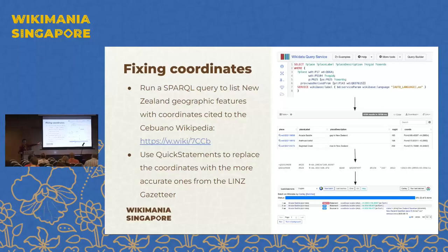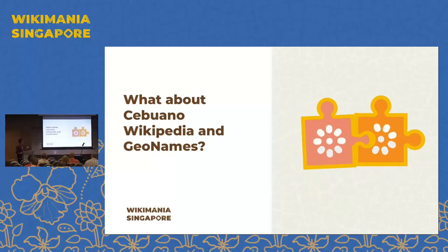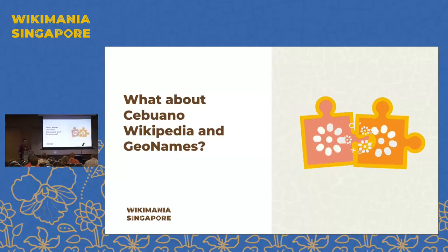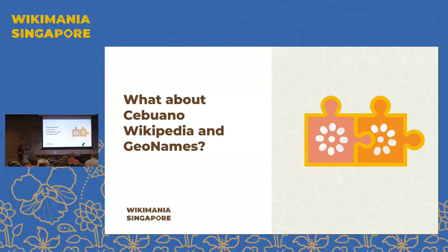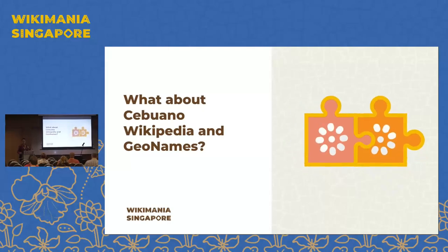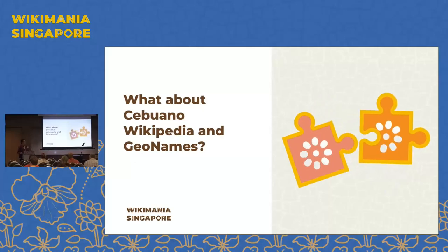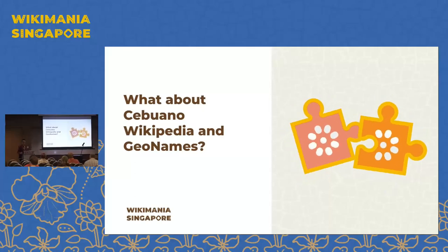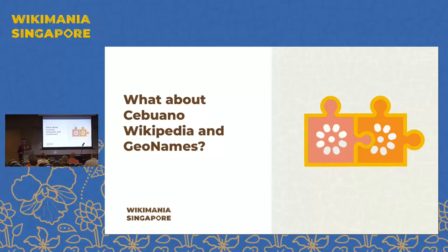That's how fixing it in Wikidata works — probably the easy part. But I didn't just want to fix up Wikidata and leave it there. I want to really close the loop to make sure it doesn't happen again — that someone uses these sites and creates duplicates again. So I actually want to also fix up the Cebuano Wikipedia for New Zealand and potentially other countries, and also GeoNames.